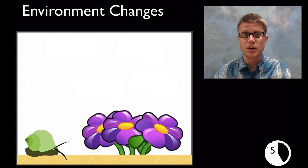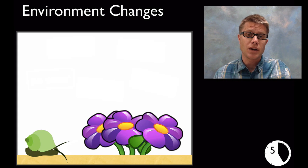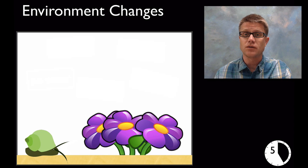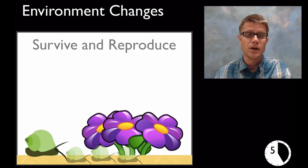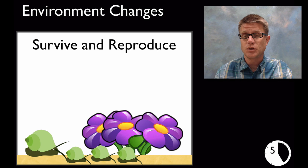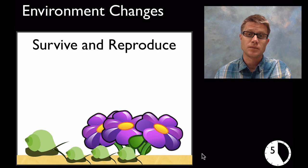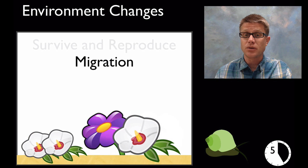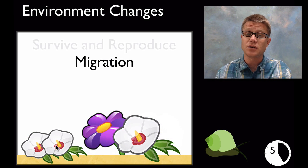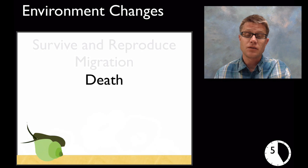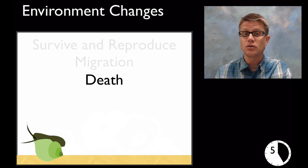In the upper elementary grades, talk about what happens when the environment changes — no food, too cold, too warm. Certain species could do well: they survive and pass their genes on to the next generation. But they might also migrate — some species might leave that area and new species might come in. Finally, there could be death, where a selective pressure causes them not to do well as a result of environmental changes.